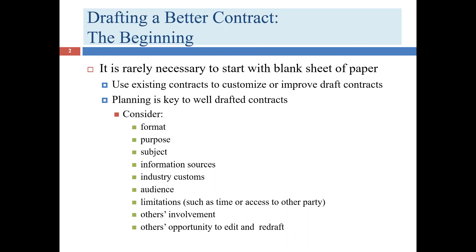Using forms is a tremendous time saver and also helps you get the best product. There are thousands of different moving pieces in a contract, so the odds of starting from scratch and nailing all of them are not very good. But if you're using a contract that has been carefully thought through as a coherent piece, you only need to think about the parts you're changing — you get the benefit of all those pre-existing judgments.